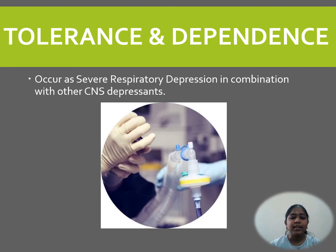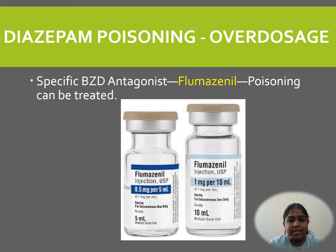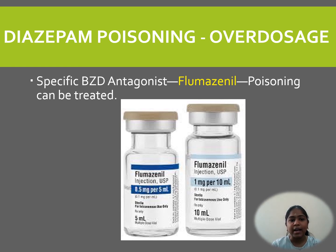Tolerance and dependence can occur, as well as severe respiratory depression in combination with other CNS depressants like alcohol. Diazepam poisoning or overdose sometimes occurs accidentally. A specific benzodiazepine antagonist is given. An antagonist is a substance that binds to the receptor and prevents the action of the agonist — it has affinity but no intrinsic activity. Flumazenil is the specific benzodiazepine antagonist used to treat the poisoning.